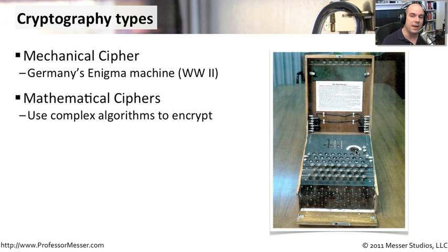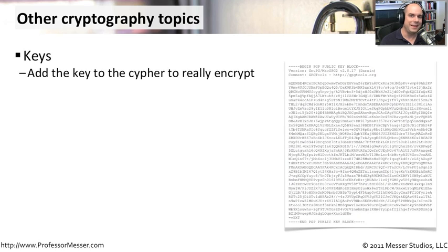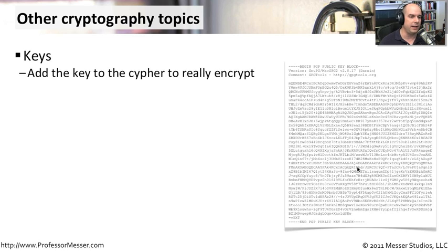We're going to go through a number of mathematical ciphers — not just in this video but in many others — where we'll talk about hashing, symmetric encryption, and asymmetric encryption. If you're interested in getting into cryptography, you'll need a strong background in mathematics. We've talked a bit about keys: if you know what the key is, you can apply it with the correct cipher to get back the plain text. Keys can be very simple, like the ROT13 key of 13, or very complex, as with PGP or GPG — such as the public key used in asymmetric encryption.